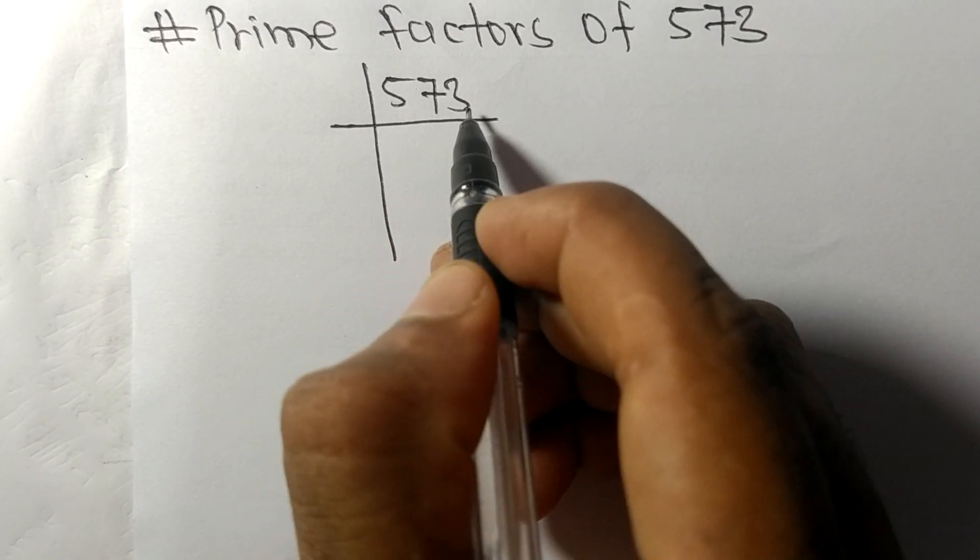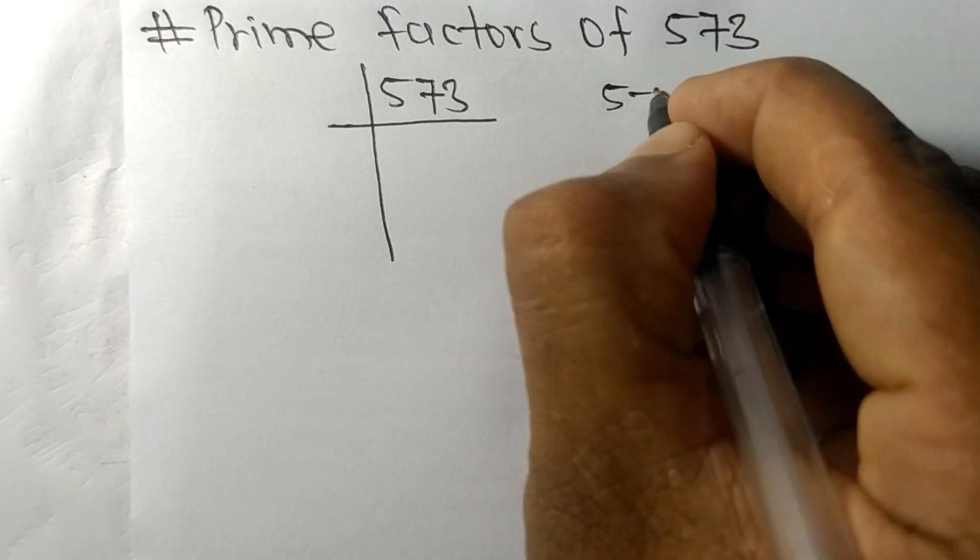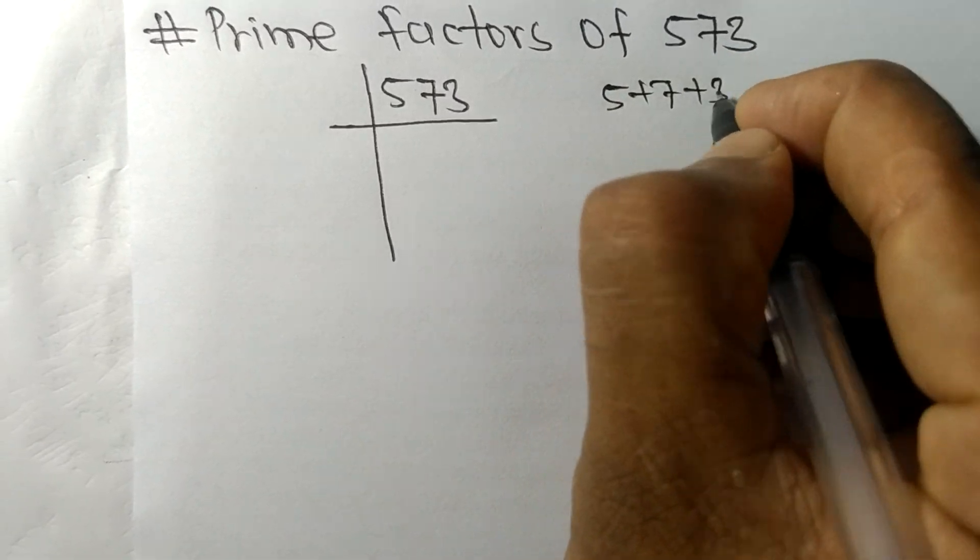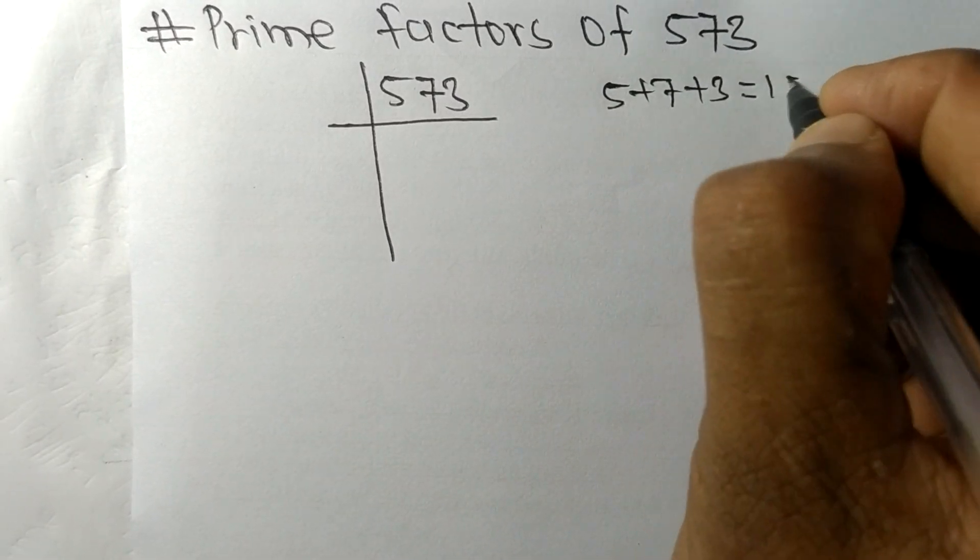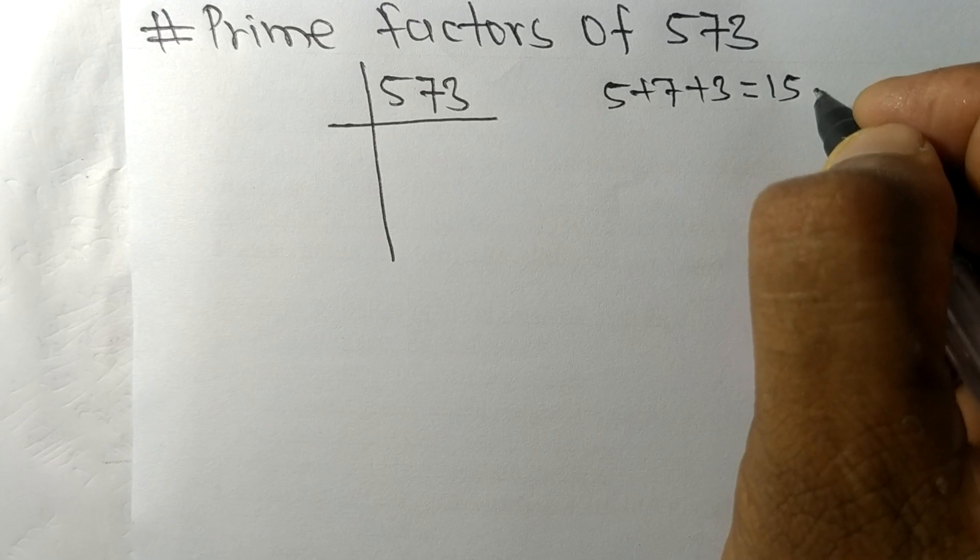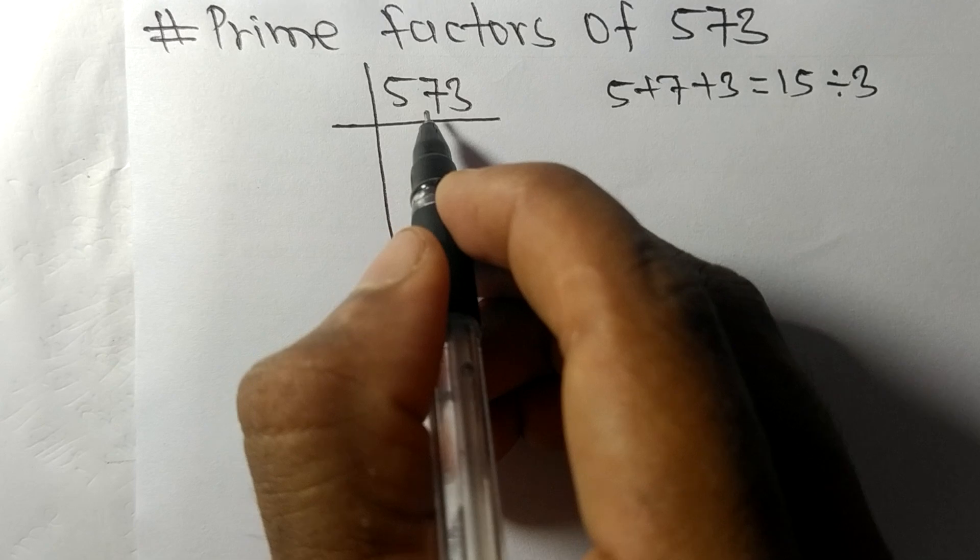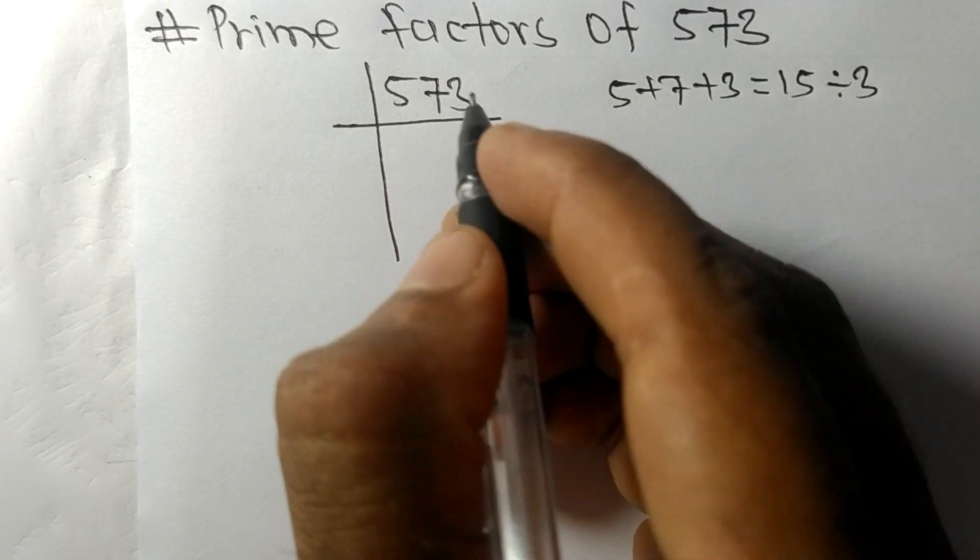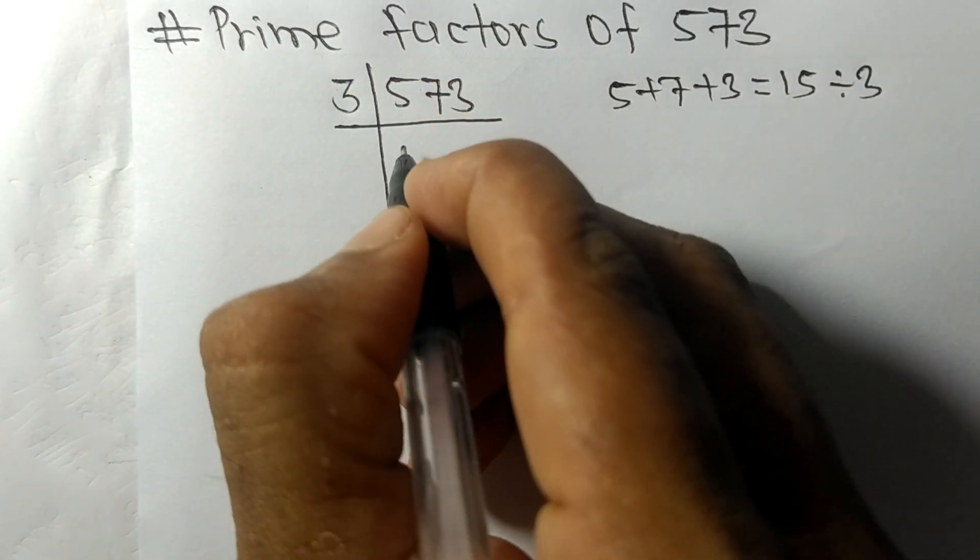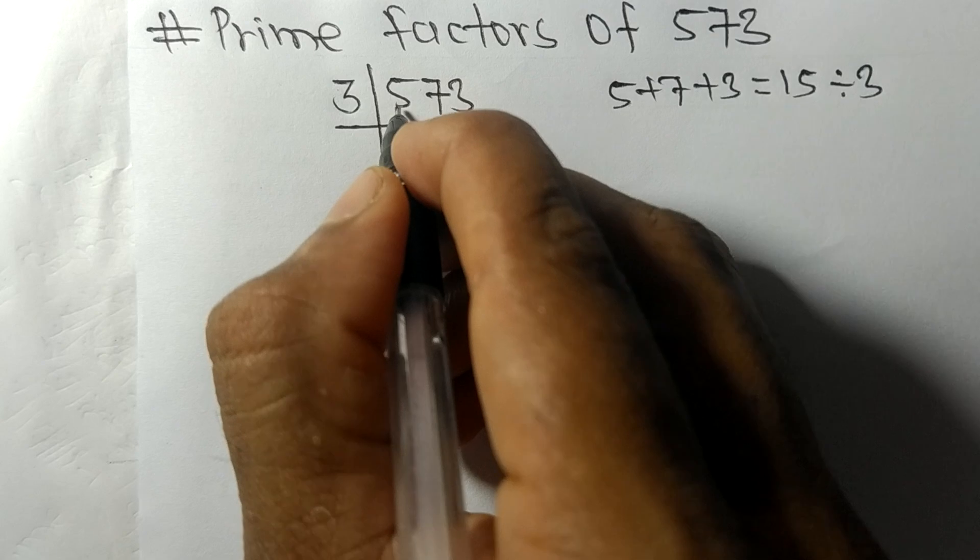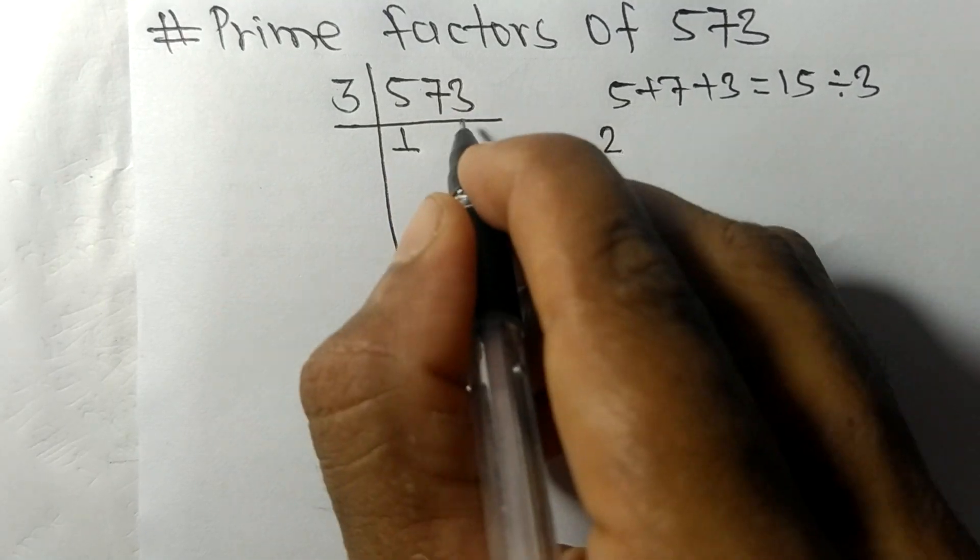When we add all these numbers, that is 5 plus 7 plus 3, then we get 15. And 15 is exactly divisible by 3, so 573 is also divisible by 3.